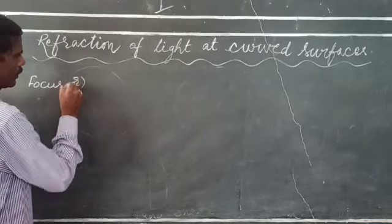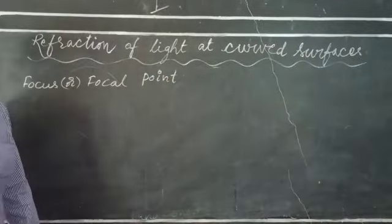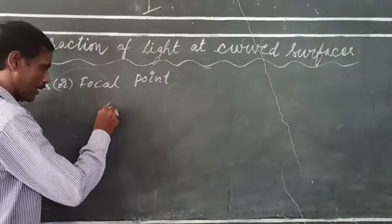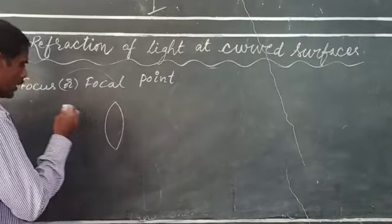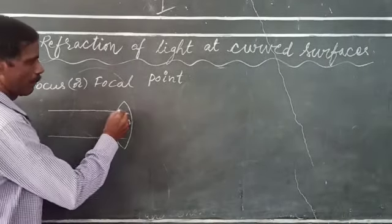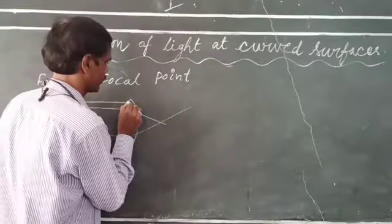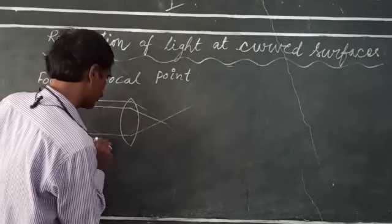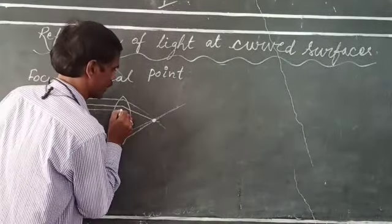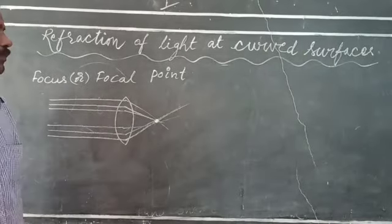We will now discuss the term focus or focal point. This is nothing but a point of convergence of light rays which pass through the lens. If a parallel beam of light rays passes through the lens, then they will converge at a point, or they seem to emanate from that point. That point of intersection of the converging beam of light is defined as the focus or focal point.